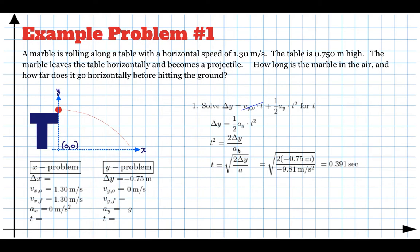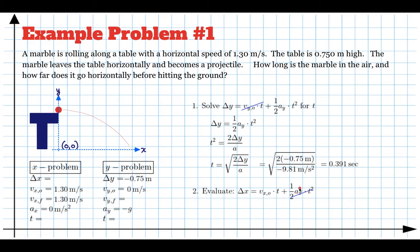Once we know the time, we solve the horizontal problem using the same kinematic equation in the x direction — with initial velocity, acceleration in x, and distance horizontally. Because the acceleration in x is zero, that term is eliminated. So delta x equals the initial velocity in x times time. Plugging in our numbers gives 0.508 meters. That's how far the marble travels horizontally before hitting the ground.